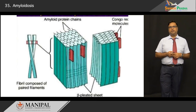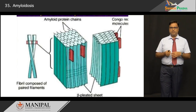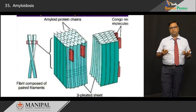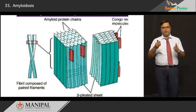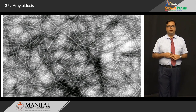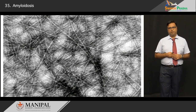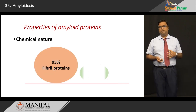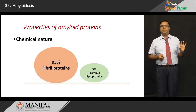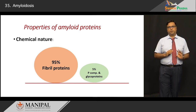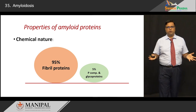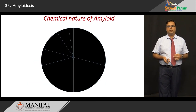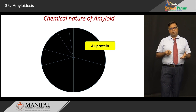This is a schematic representation of what we have said: fibrils like a stack of hay, with molecules of Congo red dye adjoining them, which binds to them and helps us to identify them. Under electron microscopy you can see the continuous, non-branching fibrils clearly. Apart from physical properties, amyloid has unique chemical properties: the vast majority — about 95% — consists of fibril proteins, and the remaining 5% is the p-component and other glycoproteins.